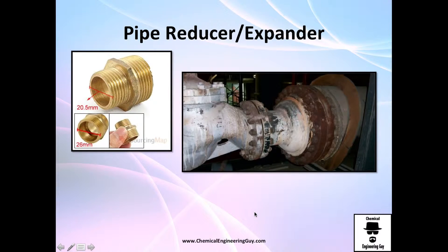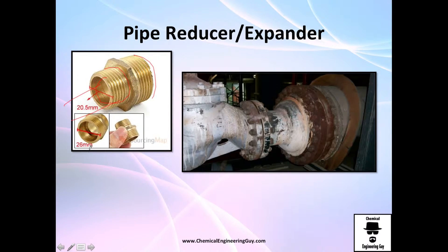Pipe reducers and expanders — it sounds fancy but it's straightforward. The most basic one might have one side at 20.5 mm and the other side at 26 mm, so you are increasing the diameter by 25 percent.